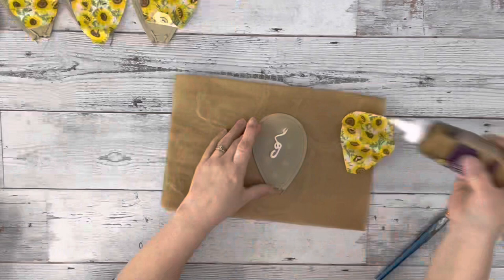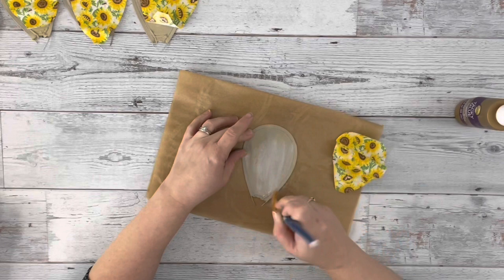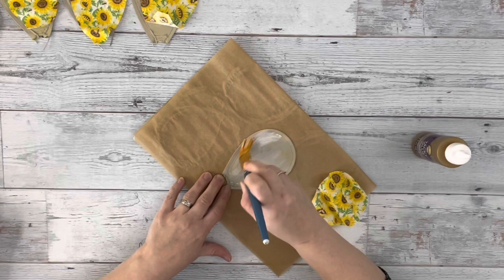And then I took tacky glue, which I get from Dollar Tree, and put some of it on the front of the petal and brushed it, covering the entire thing. It is really thick. You can use Mod Podge, but it would be really wet and it would take a long time to dry.